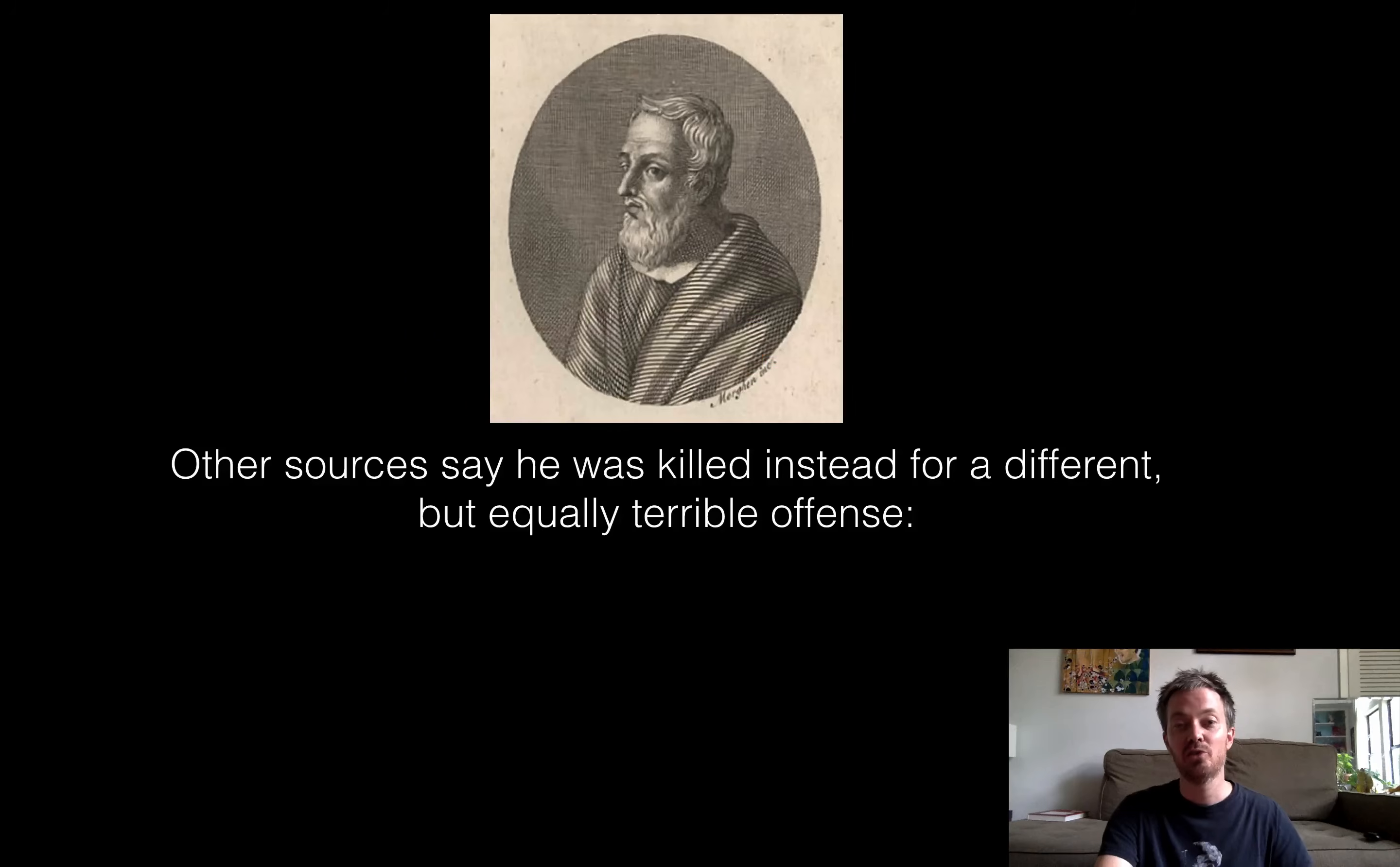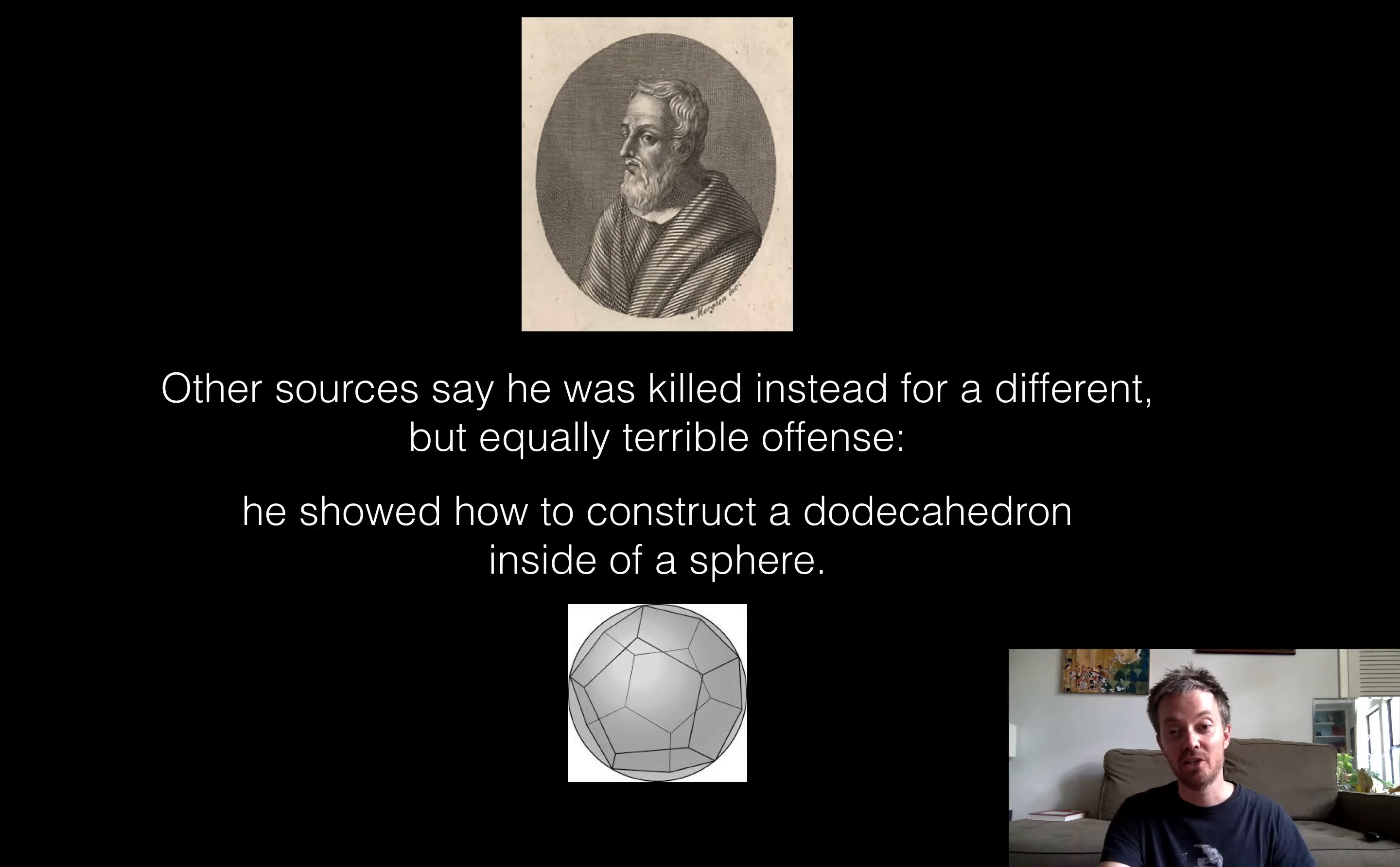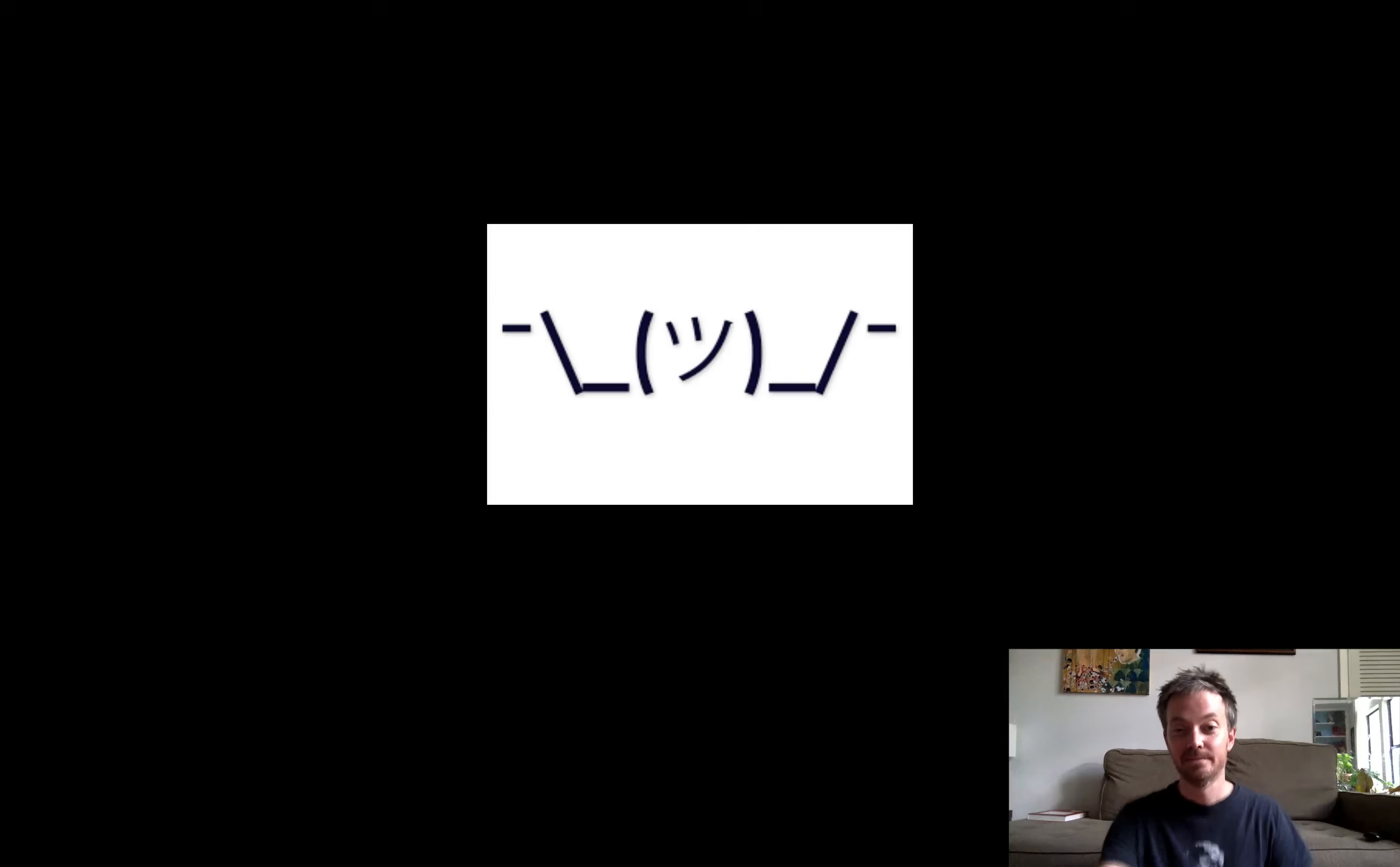They kind of, so they thought that all the numbers being rational were sort of an indication of how harmonious the universe was. And that really changed their way of thinking. So, on the other hand, they say he was killed for a different but equally terrible offense. So hopefully it wasn't for discovering irrational numbers. Some people say it was for something really bad. And it was, he showed how to construct a dodecahedron inside a sphere.